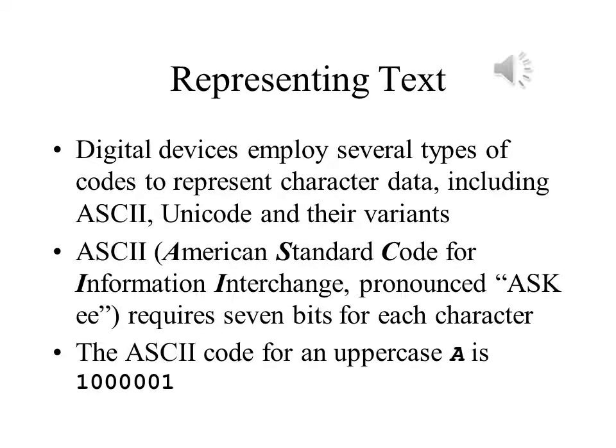One example of a numeric code that we can use to represent text is called ASCII — American Standard Code for Information Interchange. Originally, ASCII used 7 bits for each character. That meant there were enough numbers available to represent all 26 capital letters, all 26 lowercase letters, 10 digits, and all commonly used punctuation. As you can see, the ASCII code 1000001, which is equal to 65 in base 10, represents capital A.